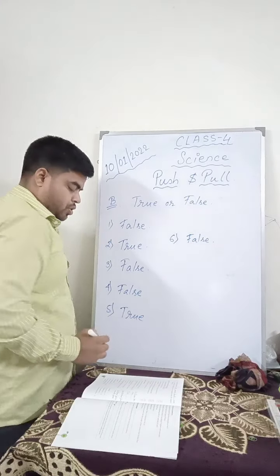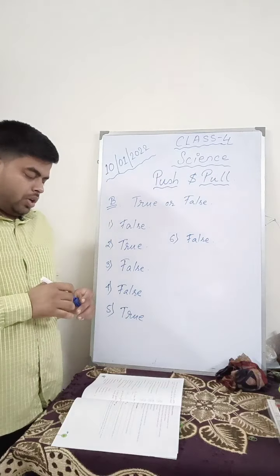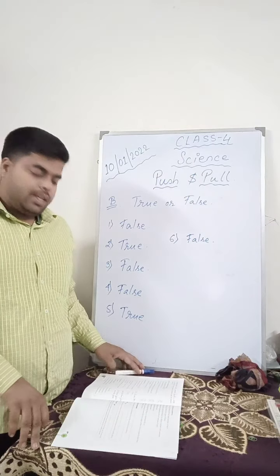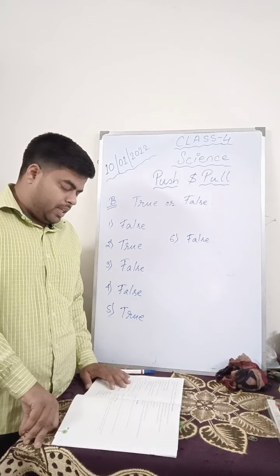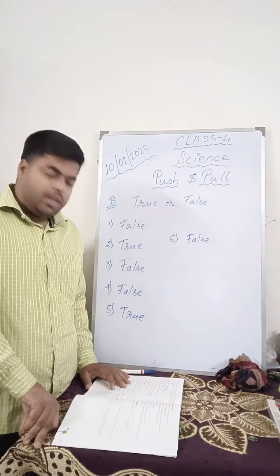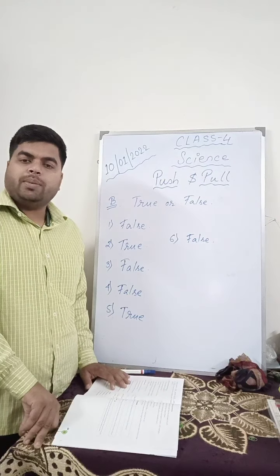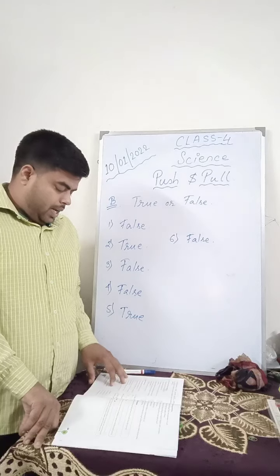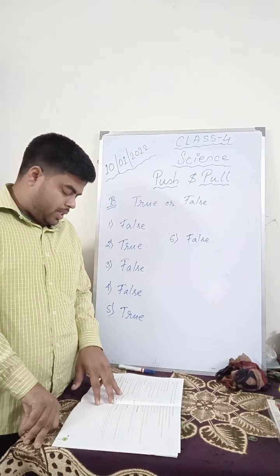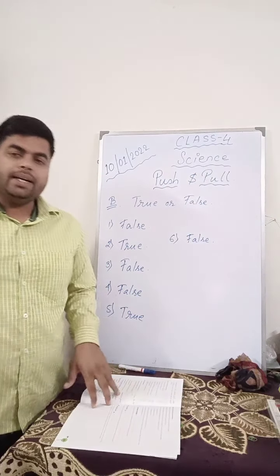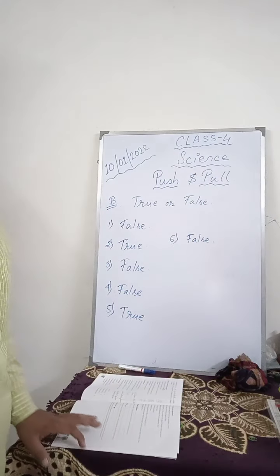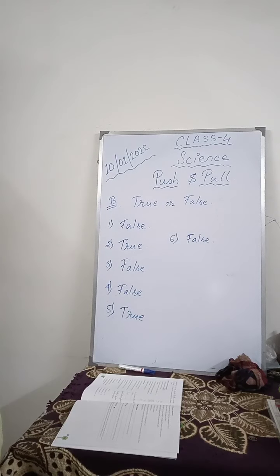So for true and false also, you will write the statement and then you will write the answer, that is either true or false. So children, for today we will keep it till here. In the next class, I will write the answer for C and D. So for today up to this much. Thank you class.